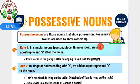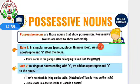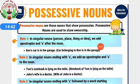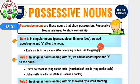Certain rules are given. Possessive nouns are those that show possession and are used to show ownership. Rule 1: in singular nouns — person, place, thing, or idea — we add apostrophe and s after the noun. Like 'Ron's car is in the garage' — Ron's: R-O-N apostrophe S. Only one person Ron, but because it is a possessive noun, we write Ron apostrophe S.